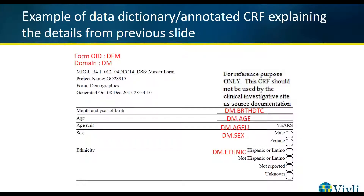Here is an example of a corresponding data dictionary where the data set and variable names have been annotated onto a blank CRF. Here we can see the data set DM refers to the demographic data. The variable age refers to the age of the subject, age_u refers to the age unit (in this case, years), sex refers to the sex of the subject, and ethnic refers to the ethnicity of a subject.